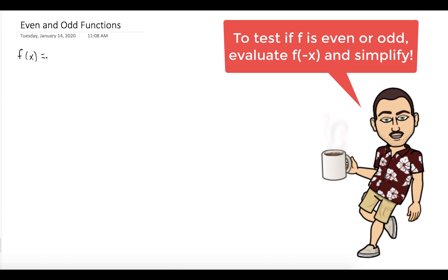So we'll start with f(x), which is (x² + 1)(3x⁵ - 2x). What we're going to do is evaluate f(-x). You do that by replacing x with -x and simplify as much as possible.